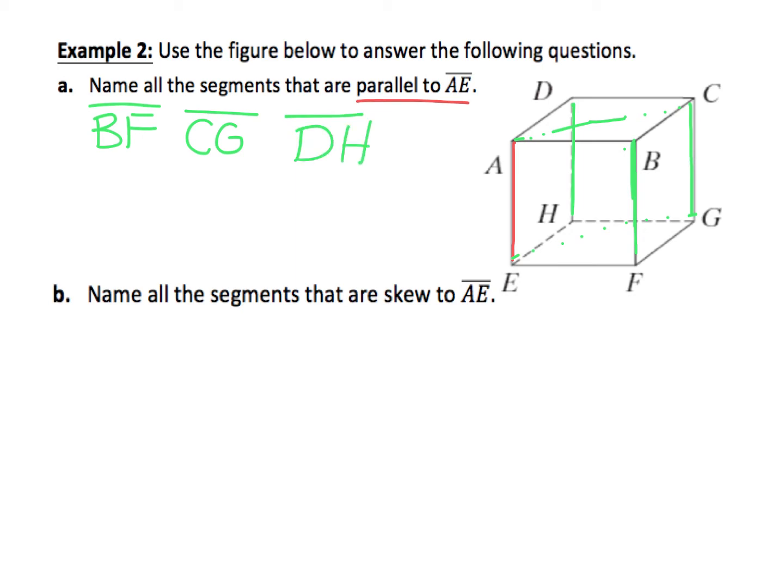Now let's name all the segments that are skew to AE. Remember, skew means that it does not intersect AE, but it also can't be in the same plane as AE. So all of the segments that I wrote for part A, those are not skew. You need to find the other segments that will never intersect it.